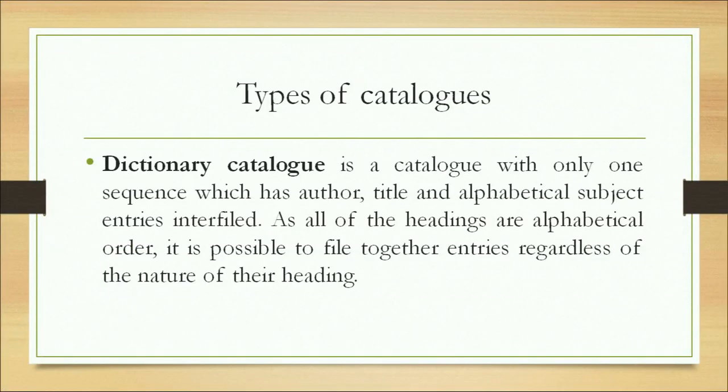A dictionary catalog has only one sequence, which may include author, title, and subject entries. All entries are arranged in alphabetical sequence since all headings are in alphabetical order. It is possible to file entries together regardless of the nature of their heading. In a dictionary catalog, entries are arranged alphabetically, as they are in a dictionary.